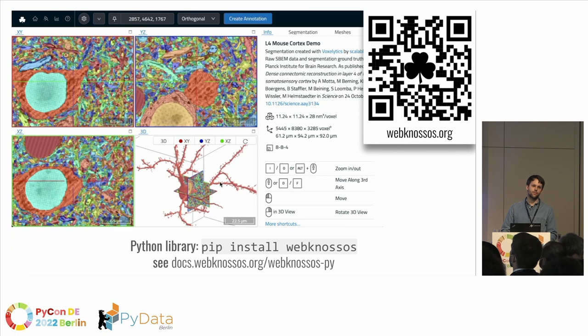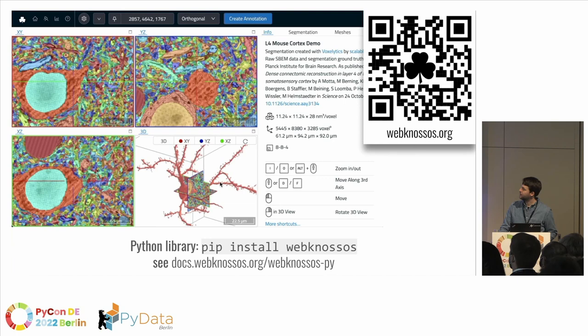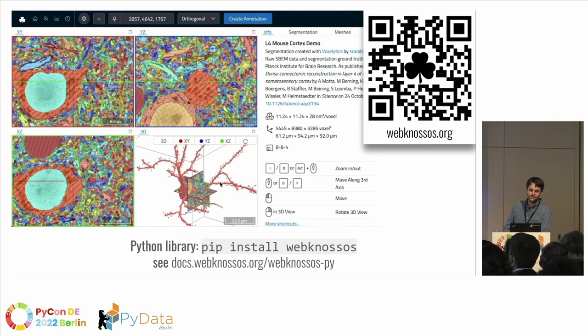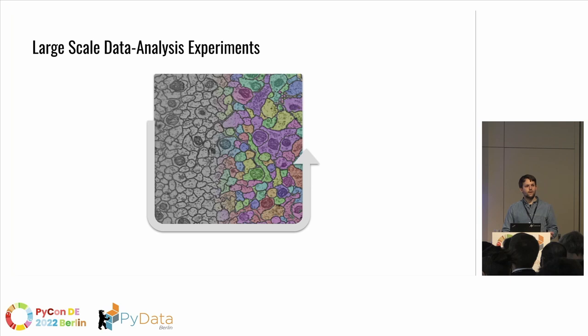We've built WebKnossos — it's a 3D viewer and annotation tool for 3D image data. Here you can see some electron microscopy data of brain tissue, and what we're doing is also the analysis of those segments, tracing which part is a cell in the brain tissue, which is colored in the picture. You can check out webknossos.org, and we also built a Python library — webknossos.py — which you can install with pip install webknossos. It's all open source.